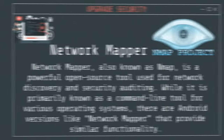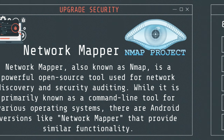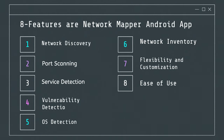Number 6: Network Mapper, also known as Nmap, is a powerful open-source tool used for network discovery and security auditing. While primarily known as a command-line tool, there are Android versions like Network Mapper that provide similar functionality. These tools are invaluable for network administrators and security professionals to map out network structures, identify connected devices, and detect vulnerabilities.